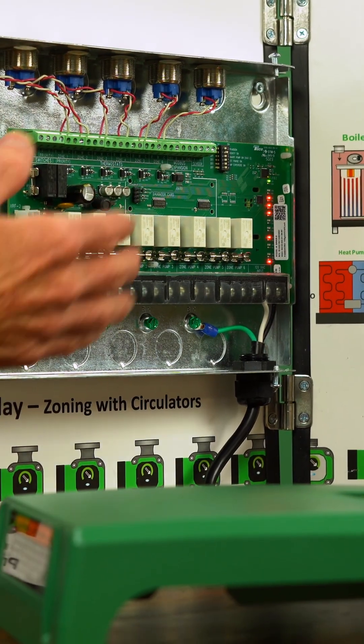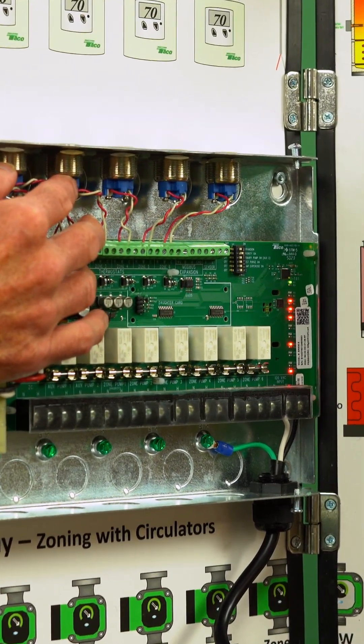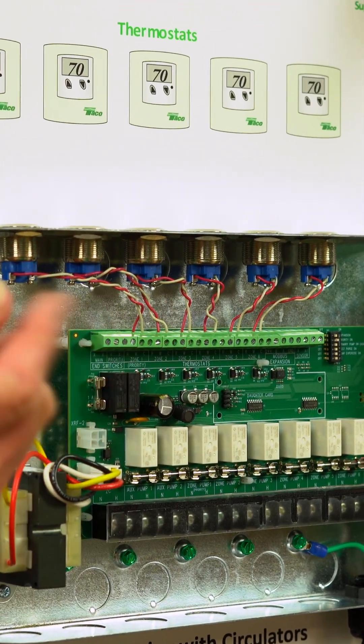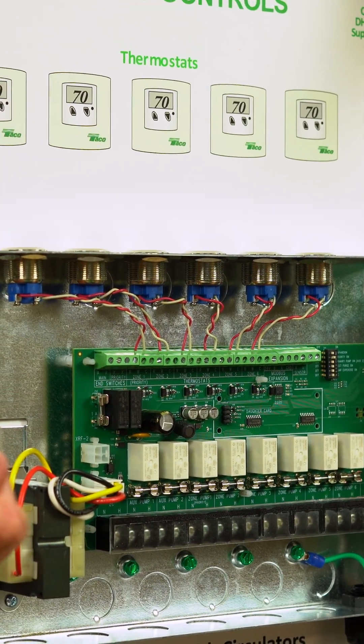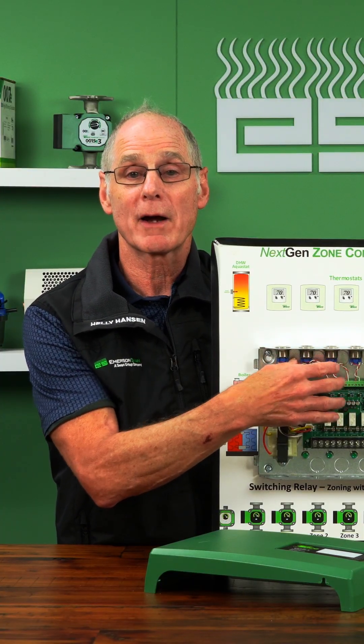The other thing that they added is a common terminal for every one of my thermostat connections on the top. I have the ability to wire in R, W, and C. It seems to be a lot more of these hardwired thermostats out there that need a common. Now we have a place to wire it in there.